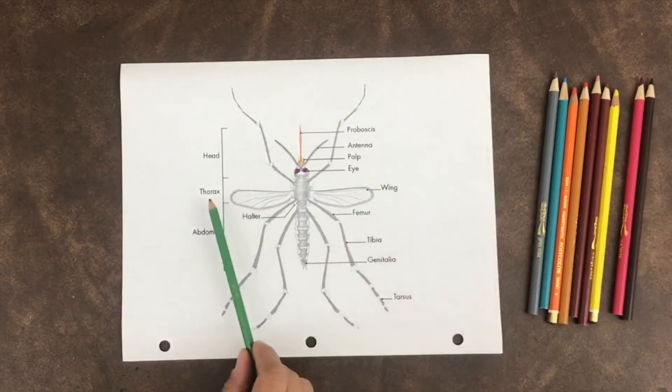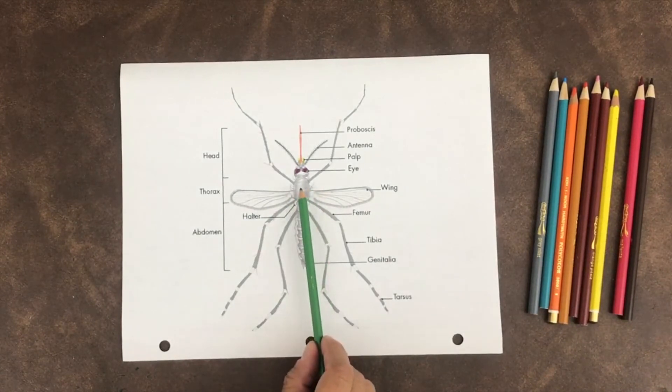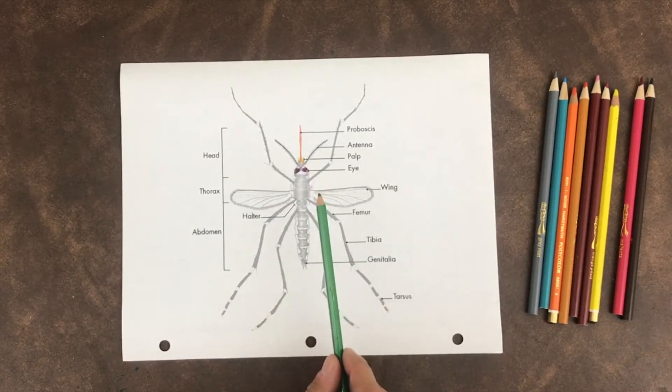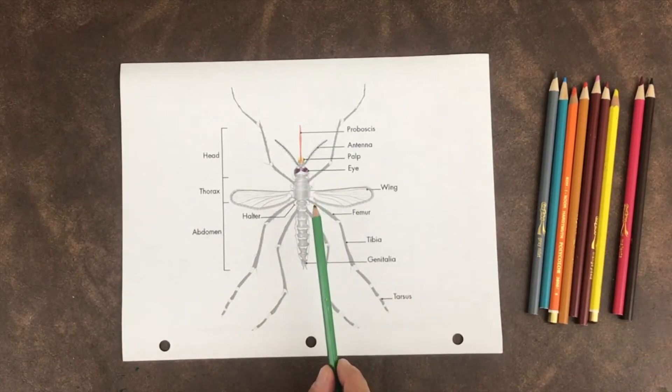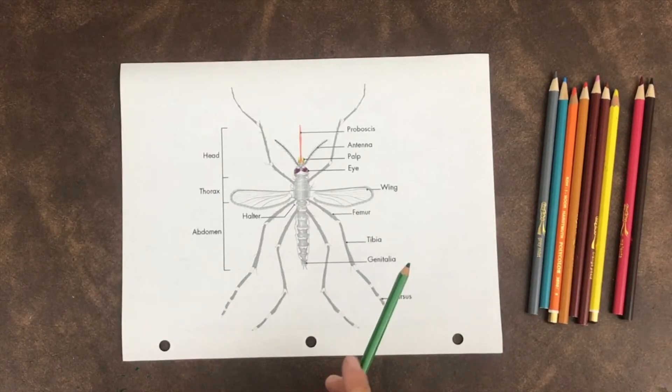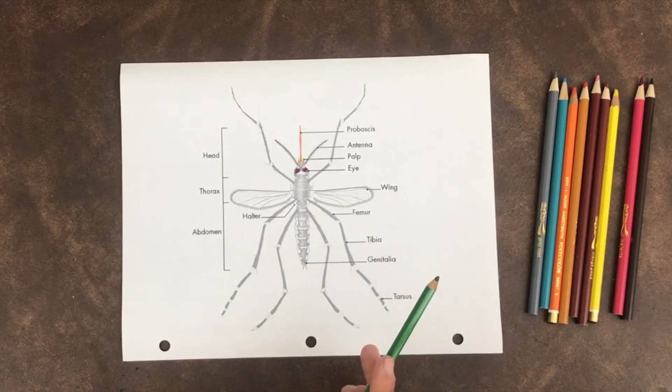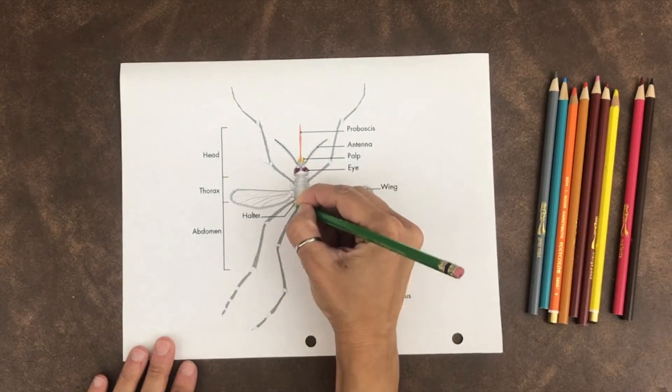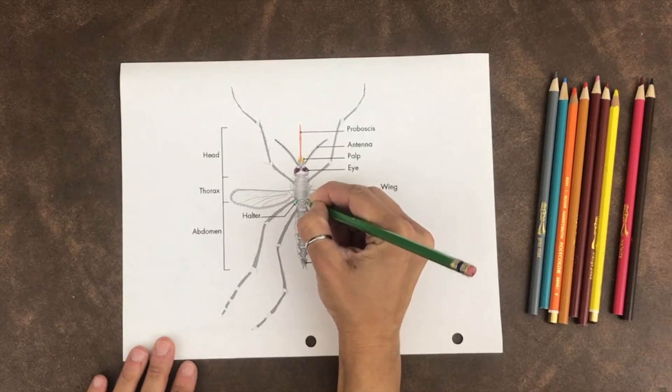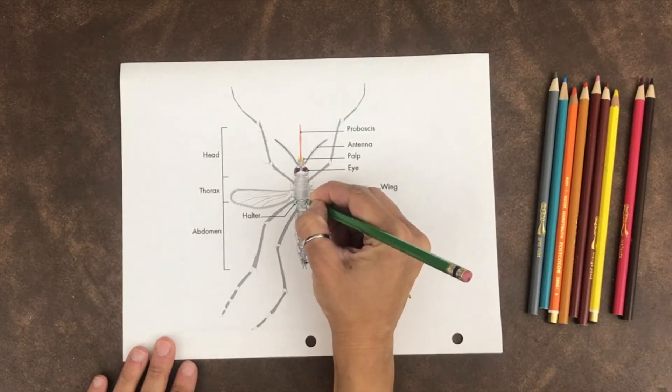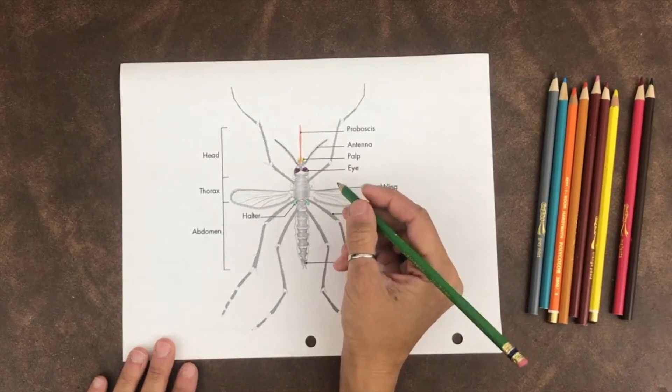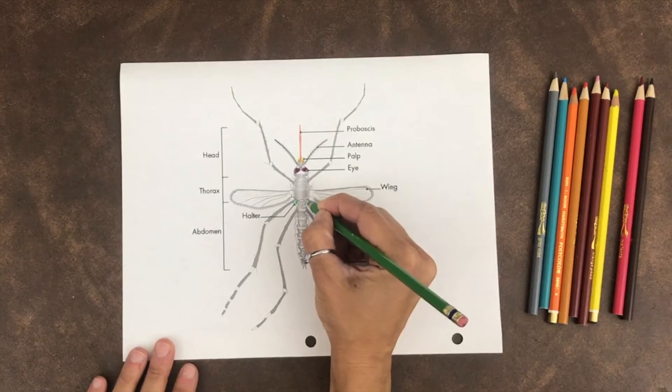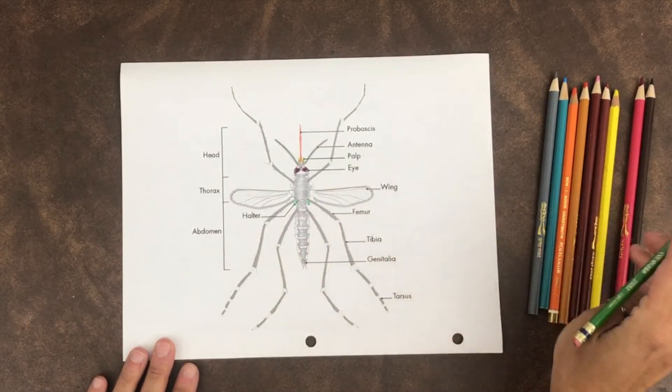Now let's move on to the thorax. The thorax is connected to the head. The wings and legs are connected to the thorax. The halter, which is right here on either side, is a wing-like organ that's used for steering while flying. Those little things help the mosquito steer while they're flying in the air.